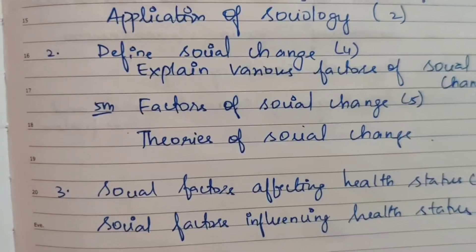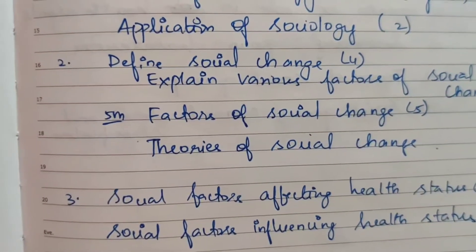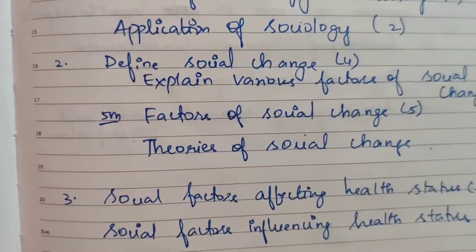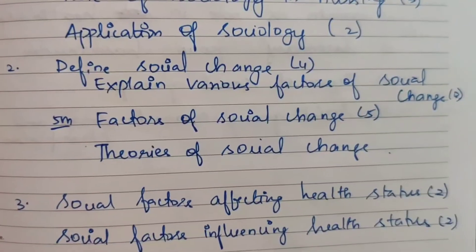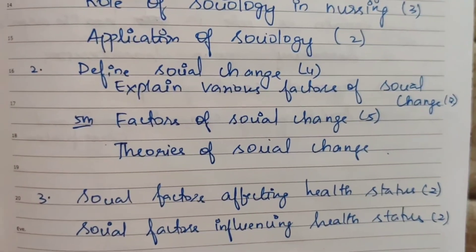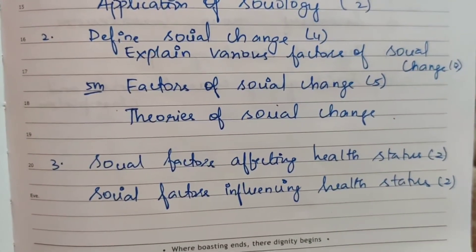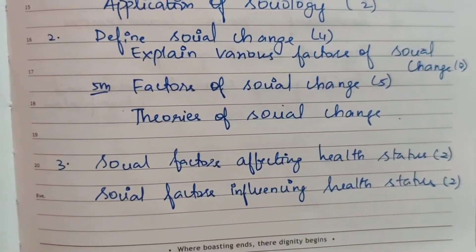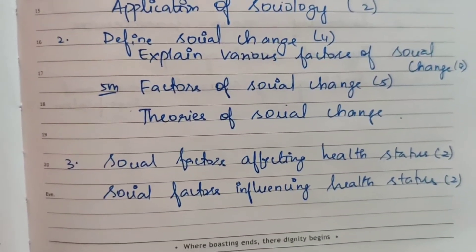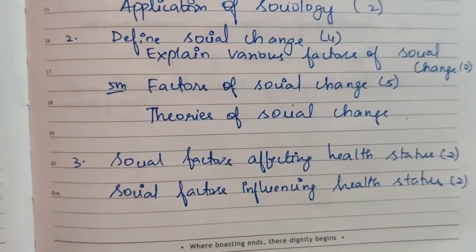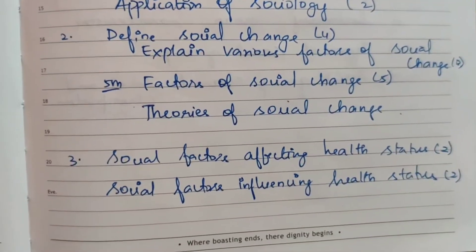Second question: Define social change — asked 4 times. Explain various factors of social change — asked three times for 15 marks and five times for 5 marks. Factors of social change has appeared five times. Theories of social change has been asked three times.